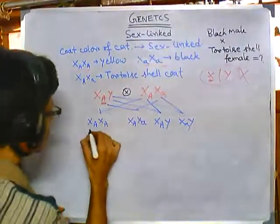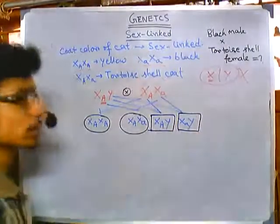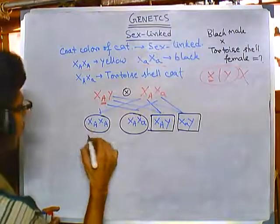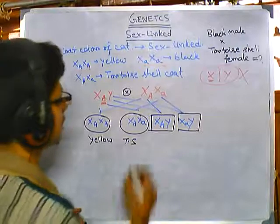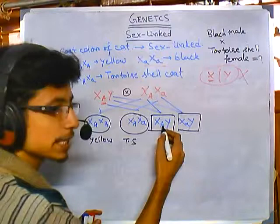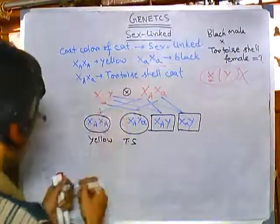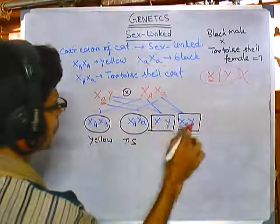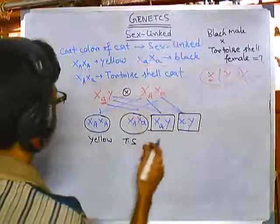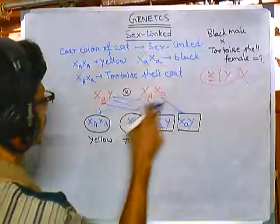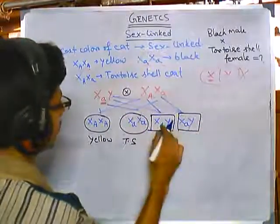From the Punnett square, we get four offspring: X-caps-A X-small-a (female), X-small-a X-small-a (female), X-caps-A Y (male), and X-small-a Y (male). Circling the females, the first is heterozygous giving tortoiseshell, the second is homozygous small a giving black coat. The males have caps A Y giving yellow, and small a Y.